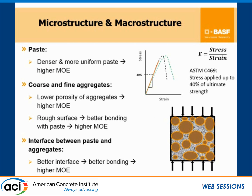MOE is by definition stress over strain. In the graph on the right side, we have two lines — one in brown and one in green. You can see that they can both have the same strength but different MOE. Per ASTM standard C469, stress applies up to 40% of ultimate strength. As was already discussed, MOE is not always the same as strength.